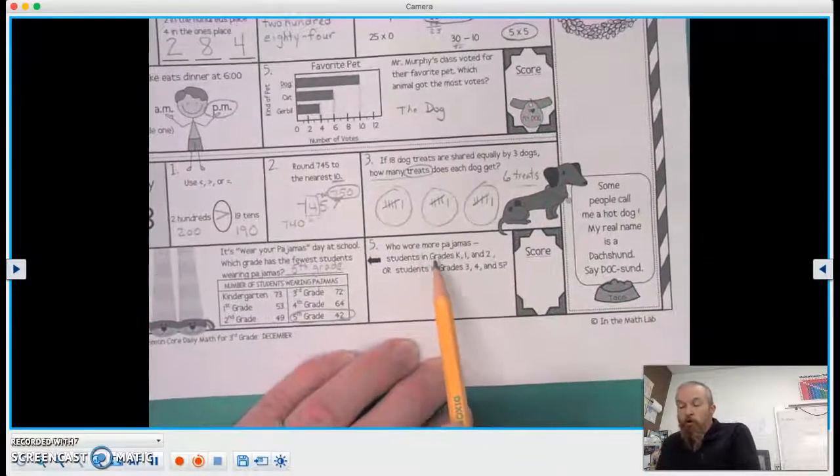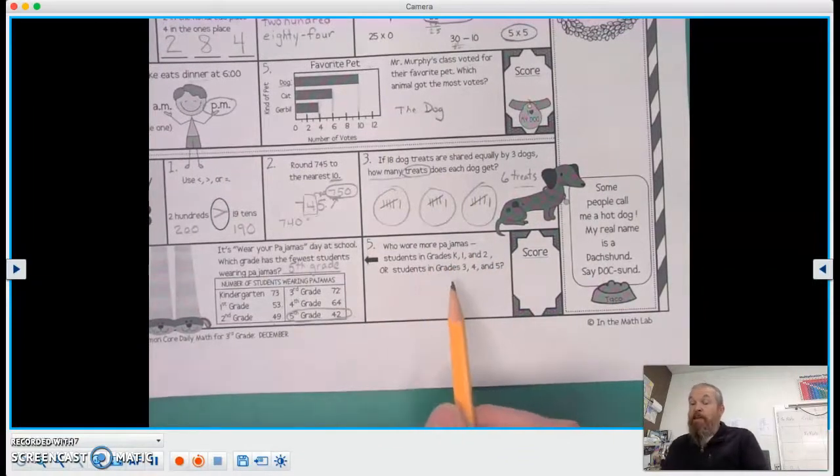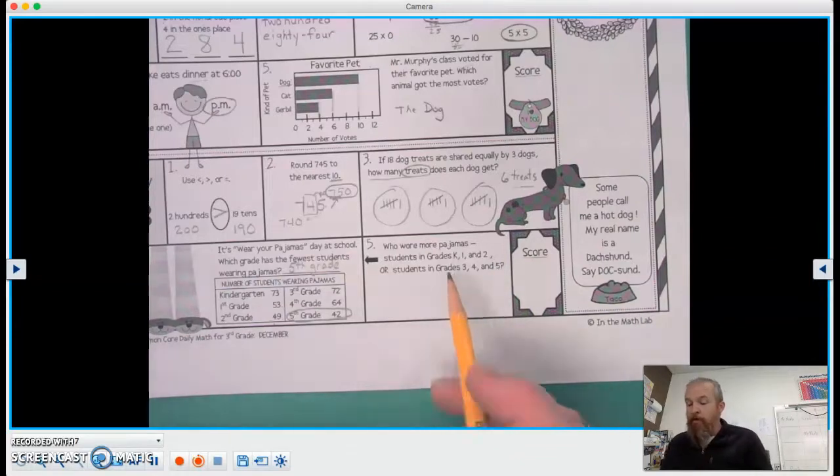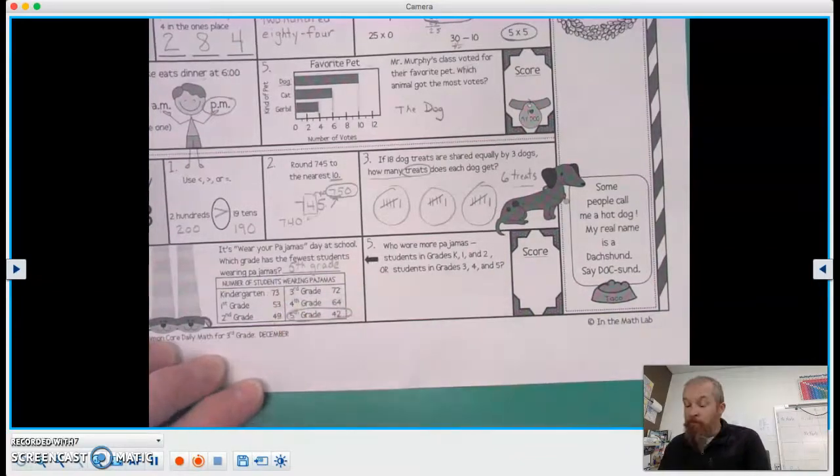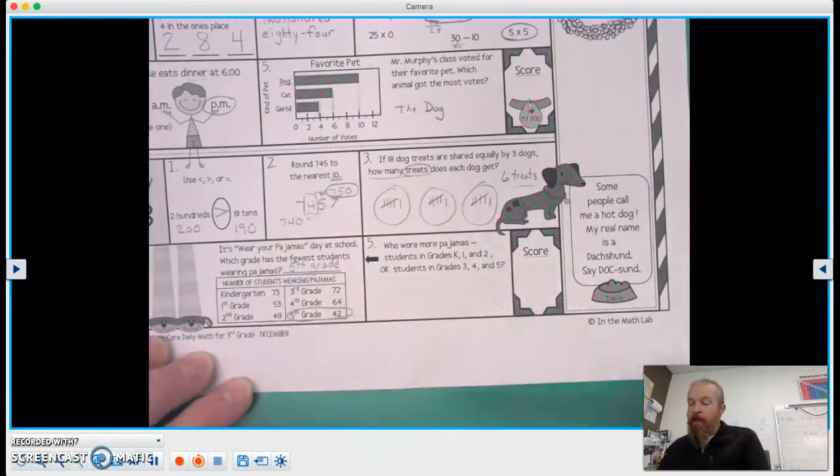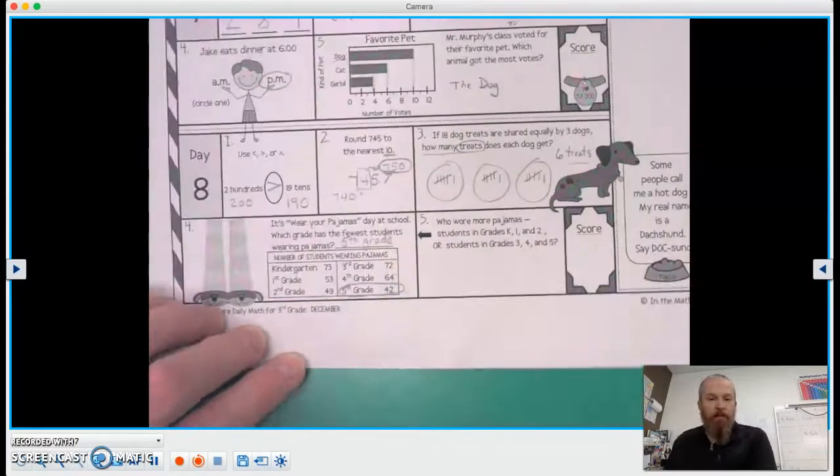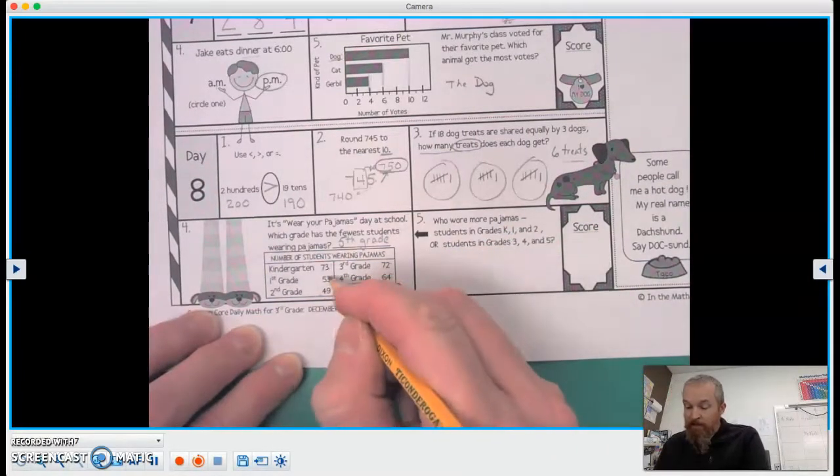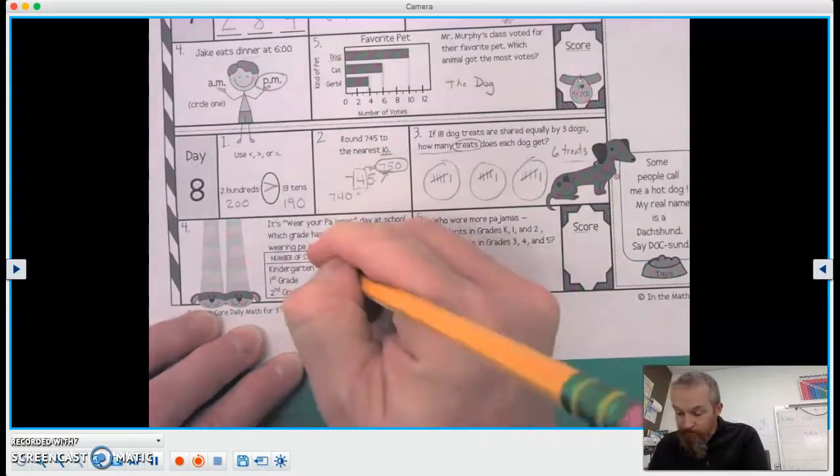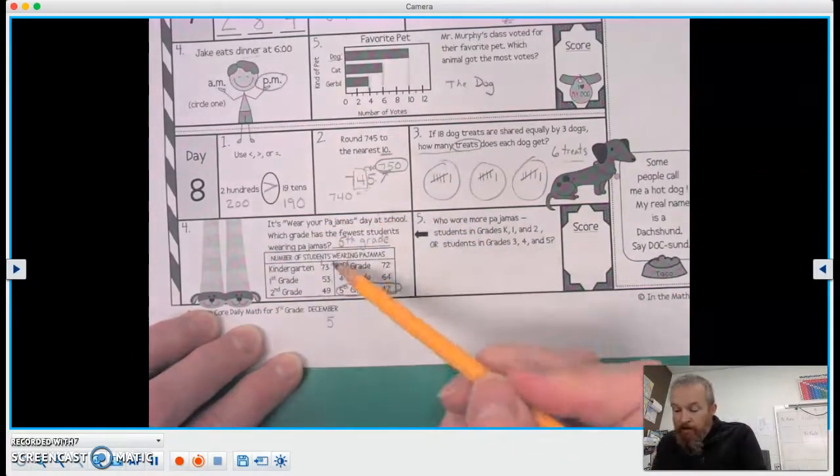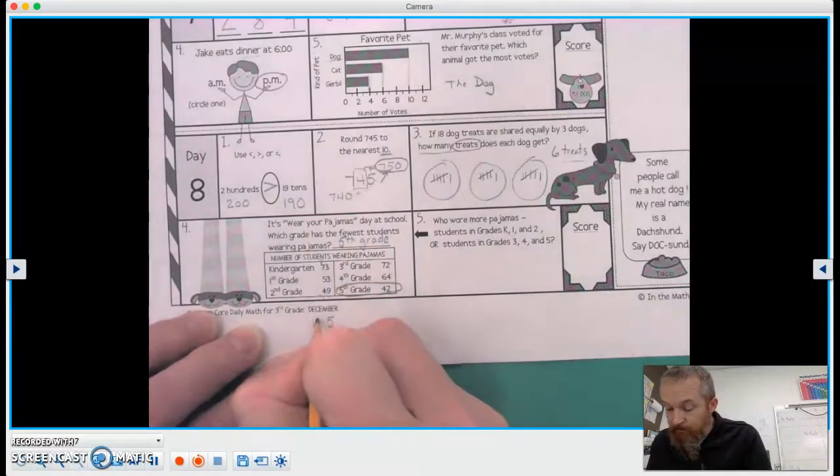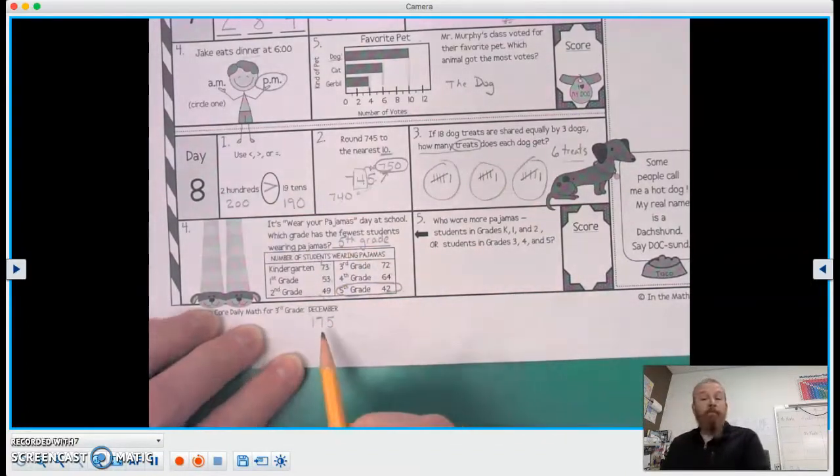All right, number five says, who wore more pajamas? Students in grades K, 1 and 2, or students in grades 3, 4, and 5? So we can go ahead and add these numbers up, because K, 1 and 2 are right here, and 3, 4, and 5 are right here. So let's add those three up. So 3 and 3 is 6, 6 plus 9 is 15. Let's see, I have a 1, a 5, and a 4, that's 10, because 1 plus 4 is 5, 5 plus 5 is 10, and 7 more is 17. So they have 175 in K, 1, and 2.